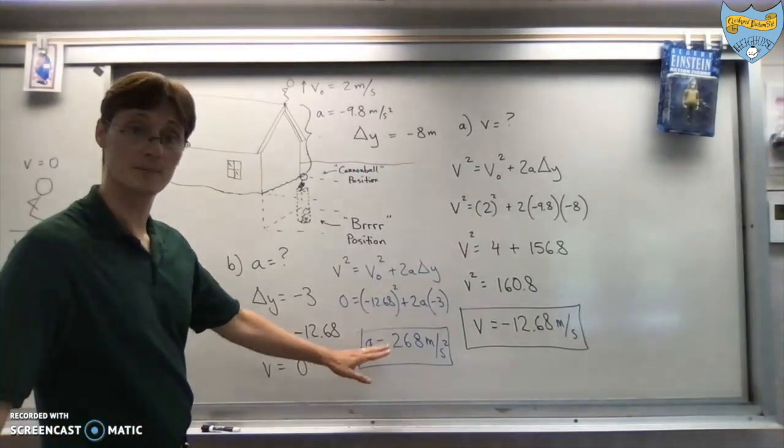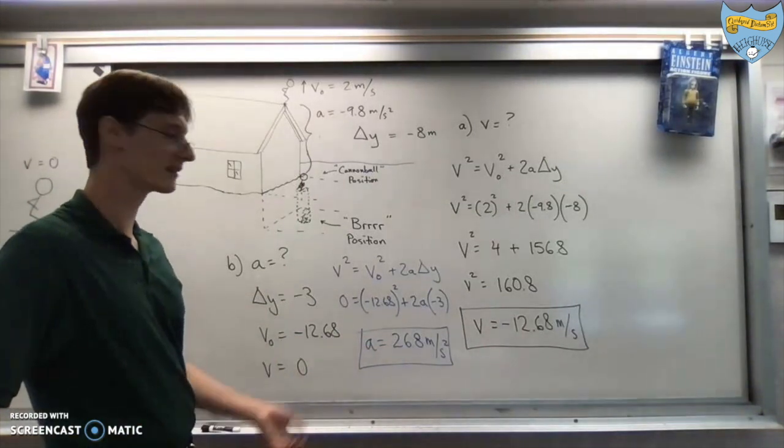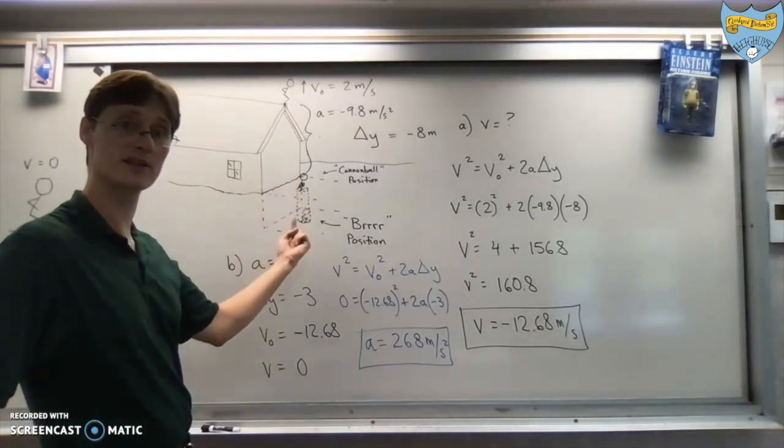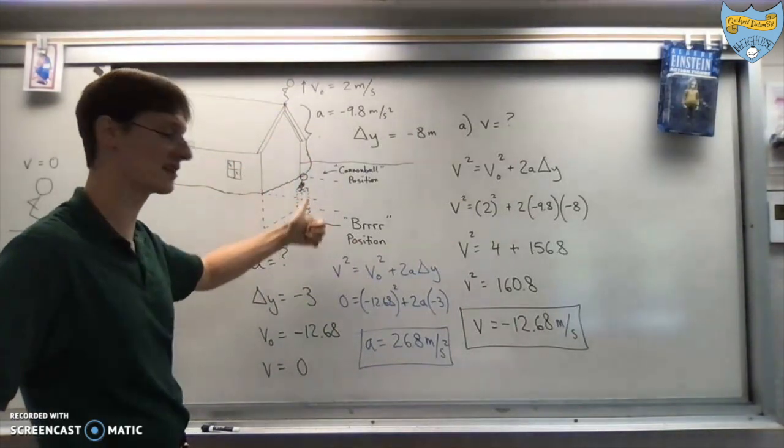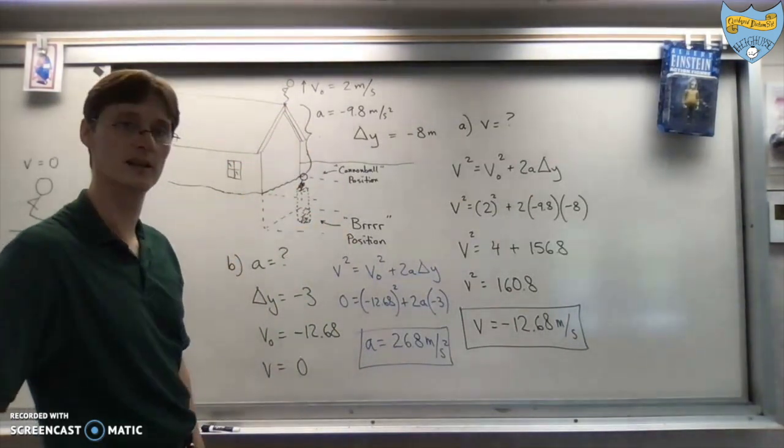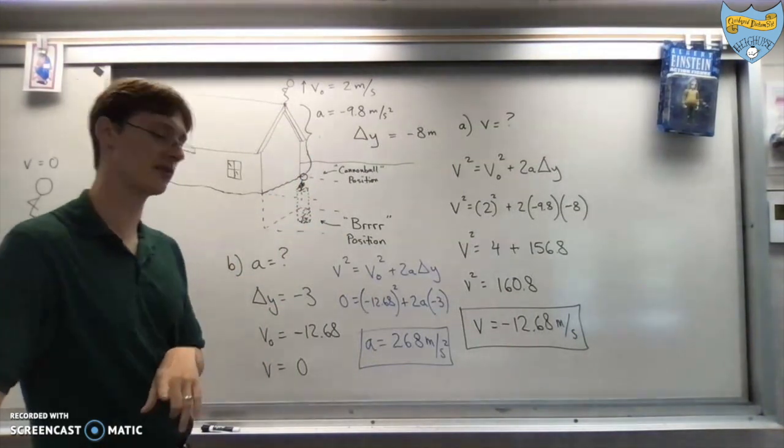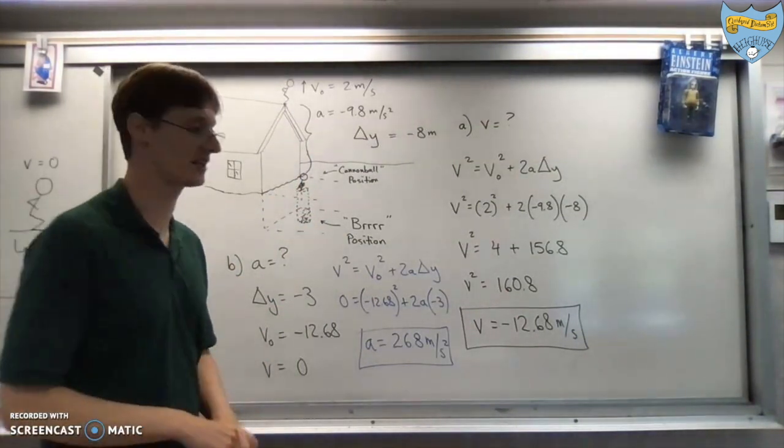If you got positive 26.8, then you did it correctly. It should be positive because the snow is pushing up on him. He's moving down but accelerating upwards, therefore coming to rest. The last part of this question asks you to solve for the time that it takes him to stop. Again, pause, resume once you know what you're doing.